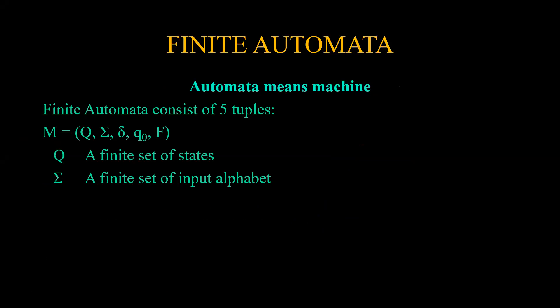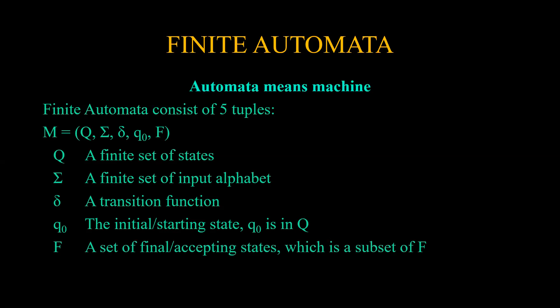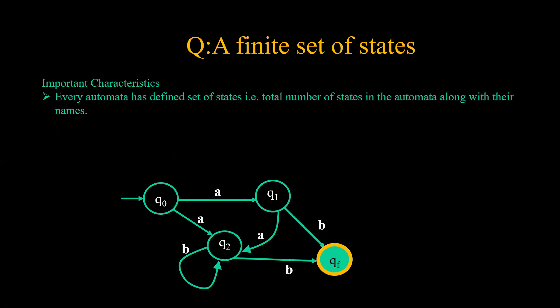The five tuples are: Q, a finite set of states; sigma, a finite set of input alphabets; delta, a transition function; Q0, the initial or start state; and F, the final or accepting state. Remember, we have one start state Q0, and we can have one or more than one final states. We will discuss every entity separately.